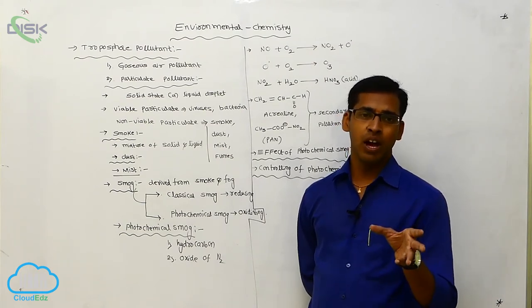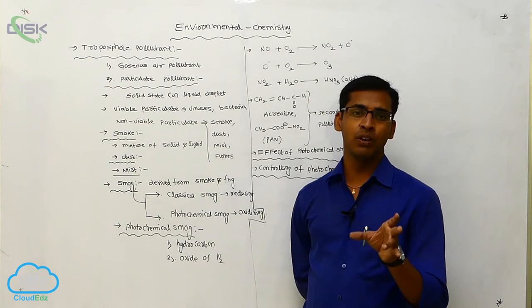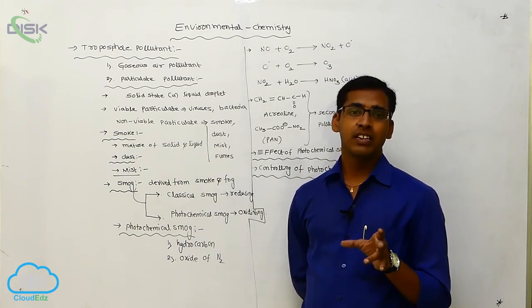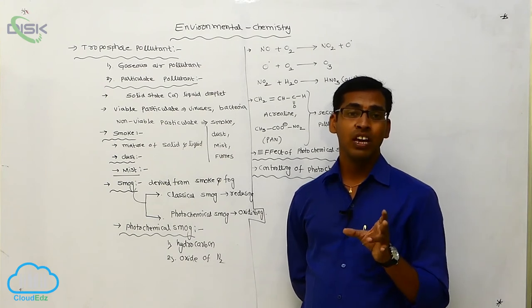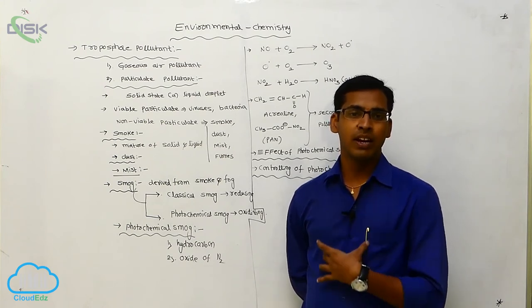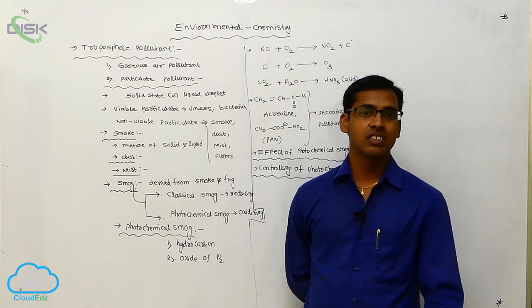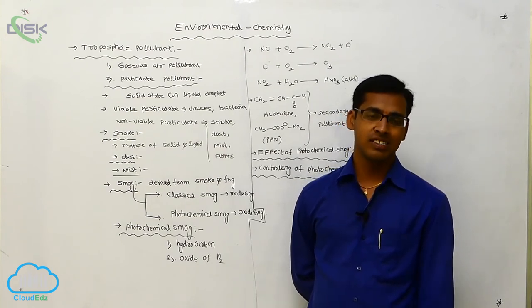This carbon monoxide interacts with hemoglobin, it forms a strong complex. It is 300 times stronger than oxyhemoglobin. So due to that, the supplying of blood is very difficult. It causes ultimately, it causes death.